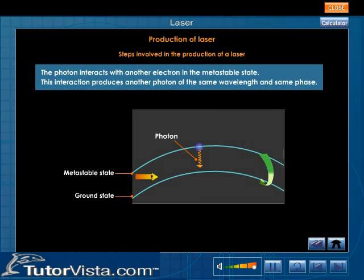This photon interacts with another electron in the metastable state. This interaction produces another photon of the same wavelength and same phase.